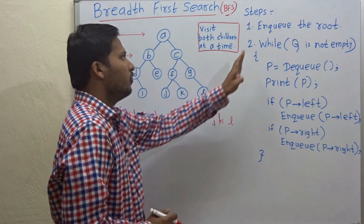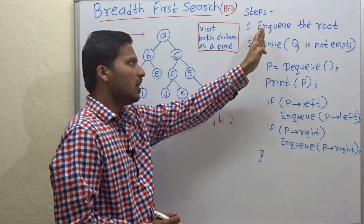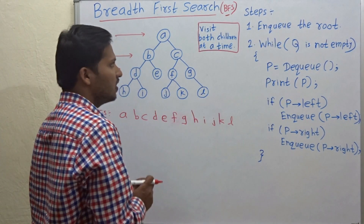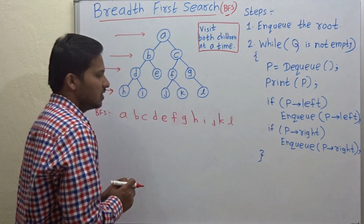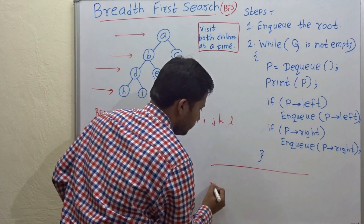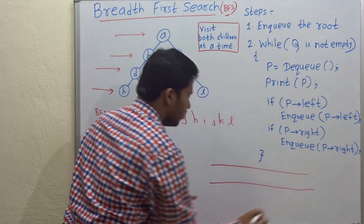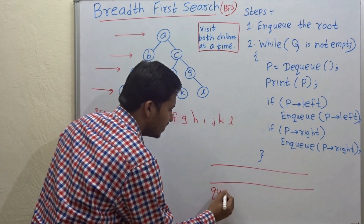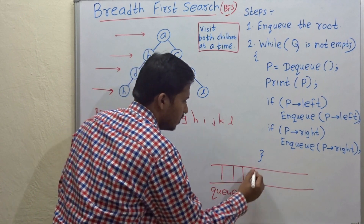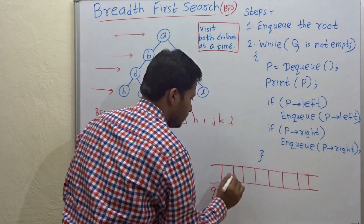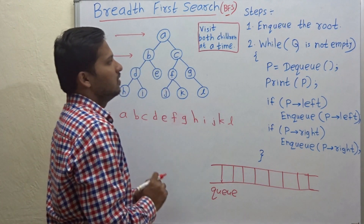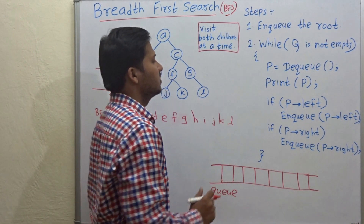For the BFS algorithm we are going to use a data structure called a Queue. This is the Queue data structure. Let us read the steps.